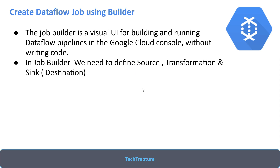To create a Dataflow job using the builder, you need to define your source — where your source data will be. Then if you need any transformation, you can define it. In this video we are going to transform our data as well, and then dump it into a sink, which is your destination. We are going to load data from a GCS bucket CSV file, apply a filter transformation, and dump it into BigQuery.